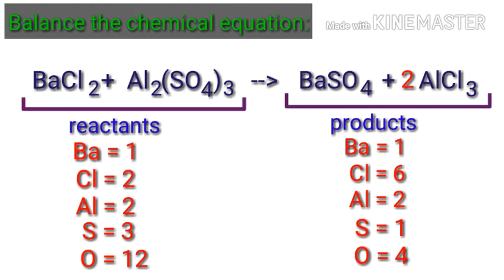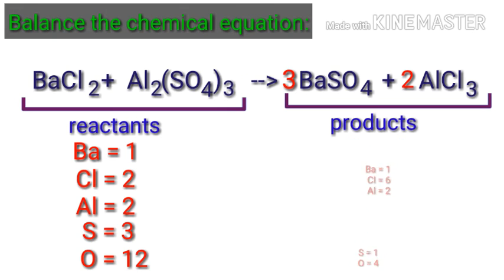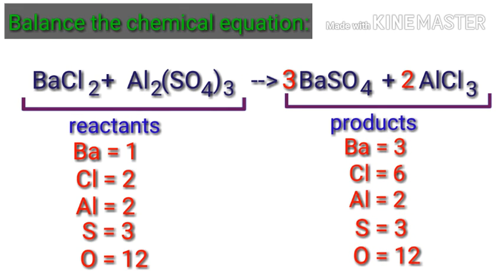Now we need to balance the sulfur atoms. To do this, we need to put a coefficient of 3 in front of BaSO₄. Now the sulfur atoms and oxygen atoms are balanced.